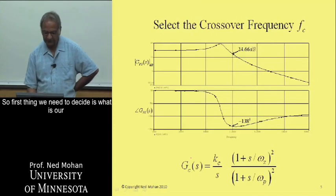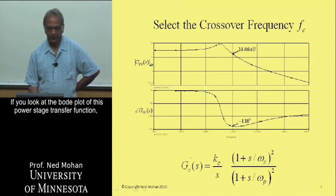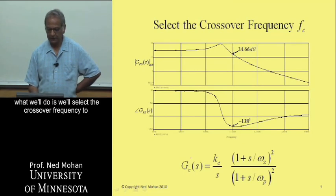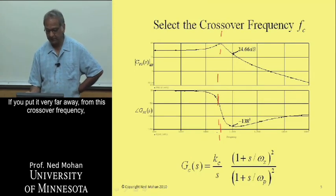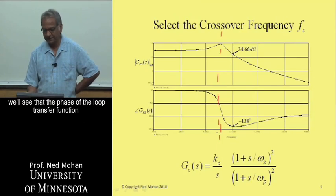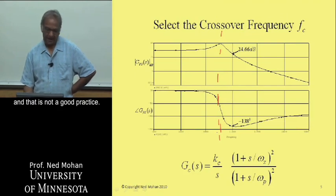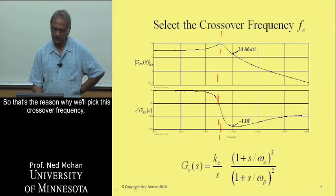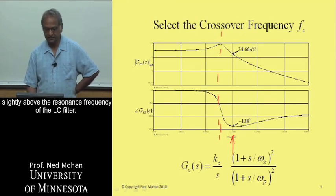The first thing we need to decide is what the crossover frequency F sub C is going to be. Looking at the Bode plot of the power stage transfer function, we'll select the crossover frequency to be somewhat beyond the resonance frequency of the LC filter — not very far, because placing it too far would cause the phase of the loop transfer function to dip below minus 180 degrees. So in this example, F sub C is set to 1 kilohertz, slightly above the LC filter resonance.